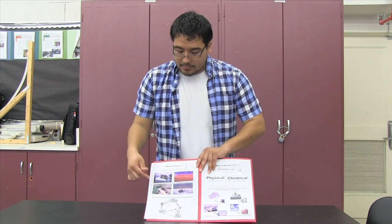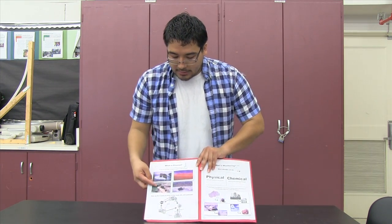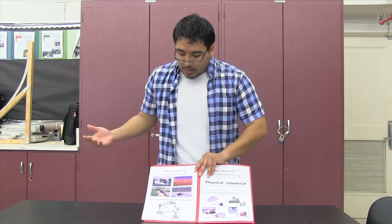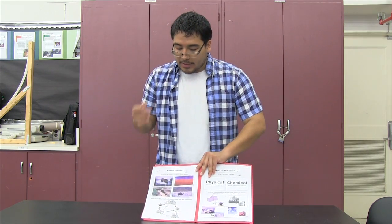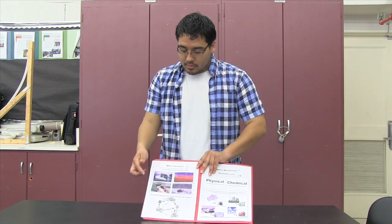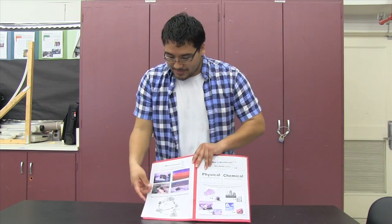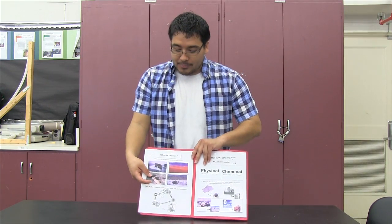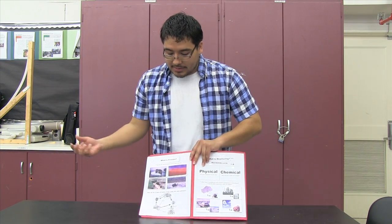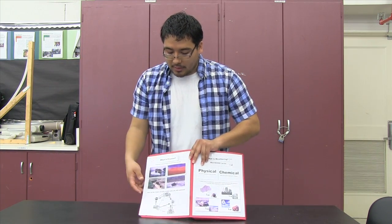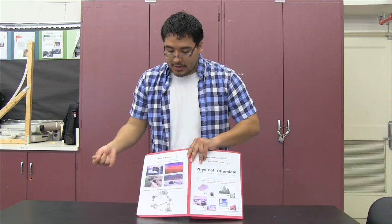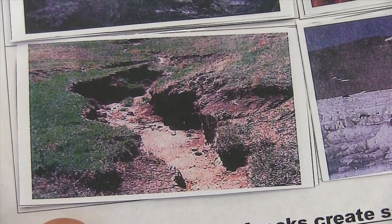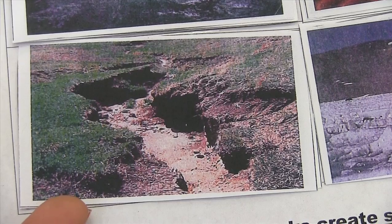So here we have, it just rained and there's a lot of mud being carried. So when it rains, the water is carrying all the soil with it in the form of mud. So this is erosion. Wind flowing through the water may cause the water to move topsoil.